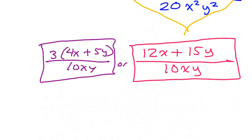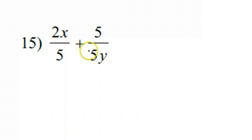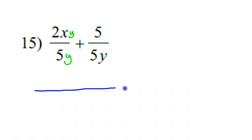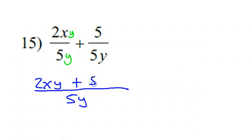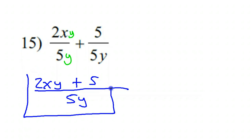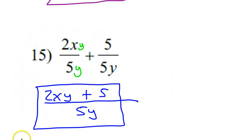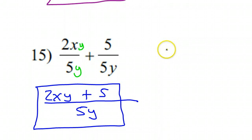How about number 15? They both have 5, so this side just needs a y in the top and the bottom. Now they are the same: 5y and 5y. So I'll use that common denominator. I have 2xy plus 5. What is common to all three terms? Nothing. So that means this is the final answer. And that is the last problem on this lesson. I hope this lesson has been helpful — I will see you on the next video.